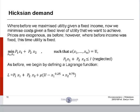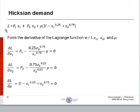Prices are exogenous as before. However, where before income is fixed, this time utility is fixed, and it acts as our constraint in the Lagrange function. So like before, we start out with our Lagrange function. We take the partial derivative with respect to x1, x2, and instead of lambda, this time we'll use the Greek letter mu.